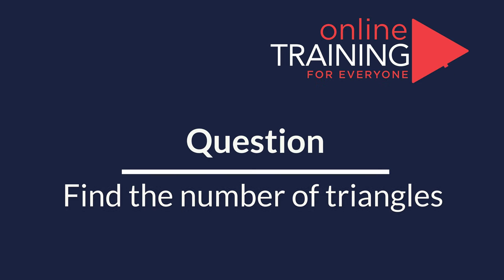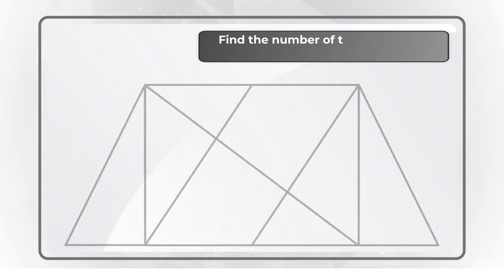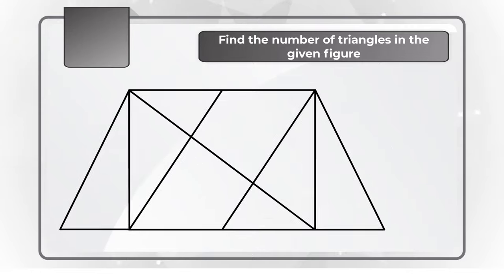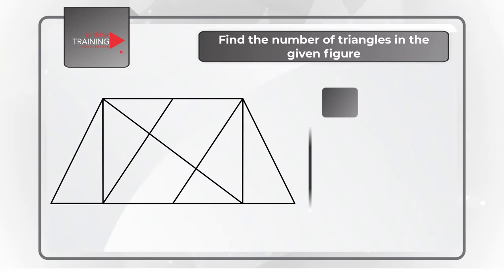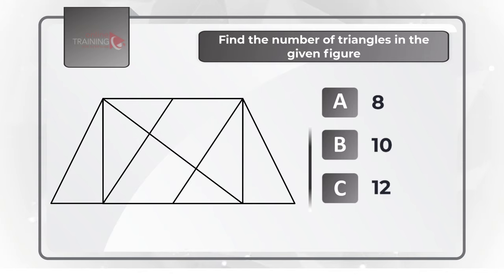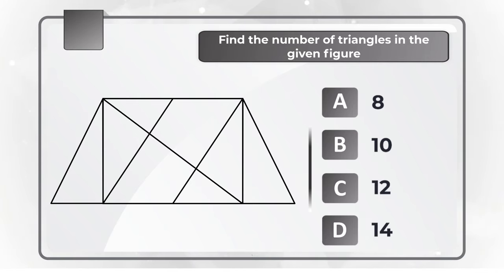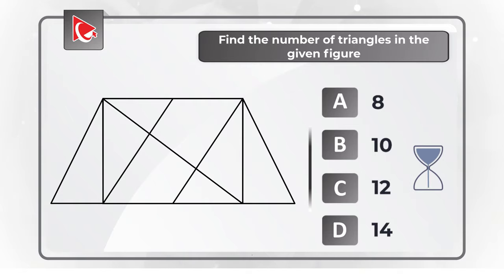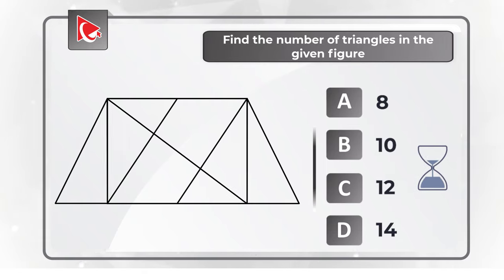And now, here's the question for you to try your skills. You need to determine how many triangles are shown on the screen. You have 4 different choices: Choice A, 8; Choice B, 10; Choice C, 12; and Choice D, 14. Feel free to pause this video to calculate the right answer, and make sure to post your solution in comments so I can give you my feedback. Thanks for participating and good luck.